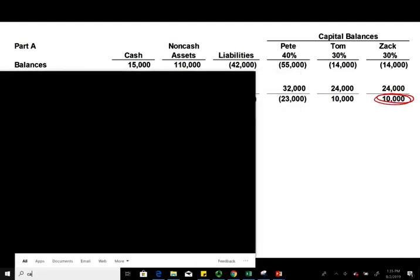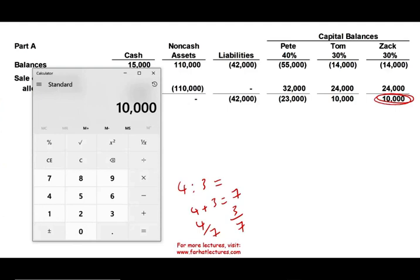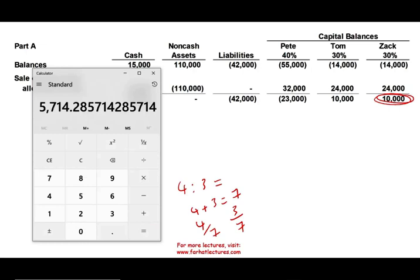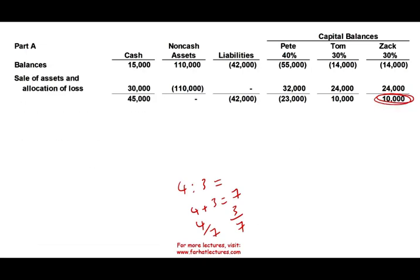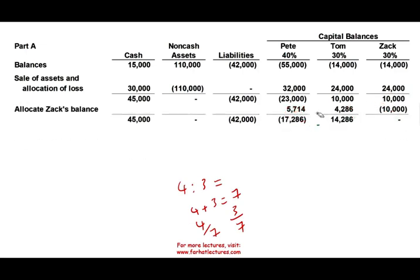Let's do the computation. Of the $10,000 that Zach cannot recover: 4 sevenths times $10,000 equals $5,714, which goes to Pete. The remaining 3 sevenths equals $4,286, which goes to Tom. So we reduce Pete's balance by $5,714 and Tom's balance by $4,286. As a result, Tom's account goes even further into deficit — to negative $14,286. No worries, remember Tom has money from personal assets. Pete's account is still a credit, though it went from $23,000 down to approximately $17,286.